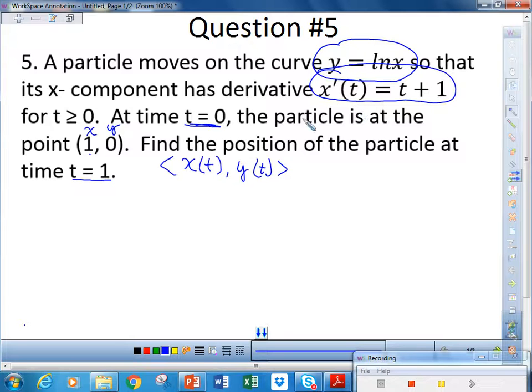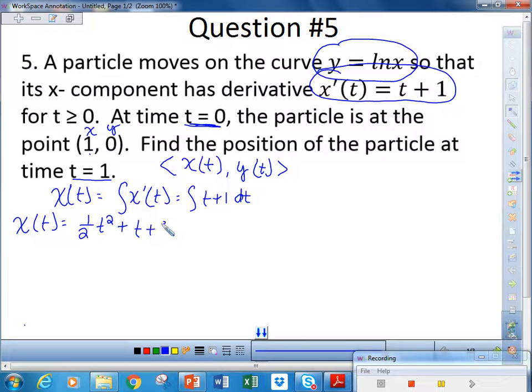Now, in order to find x of t, we're given x prime of t. So in order to find x of t, we have to find the integral of that. So x of t is going to be equal to the integral of x prime of t, which in this case would be the integral of t plus 1 dt.